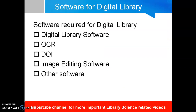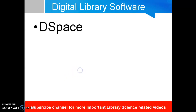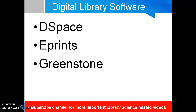Different software is required for a digital library: digital library software, OCR, DOI, image editing software like Photoshop, and other software like protection software or operating systems. The open source software for digital library includes DSpace, Eprints, and Greenstone.